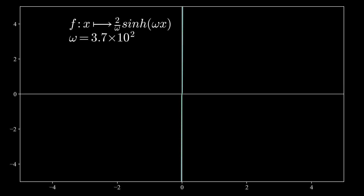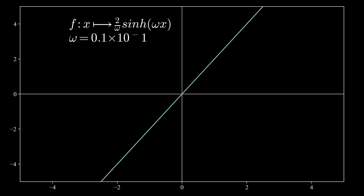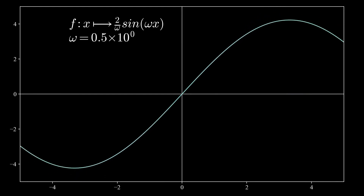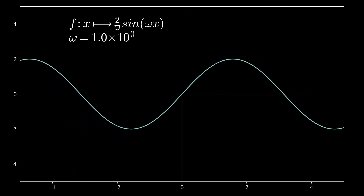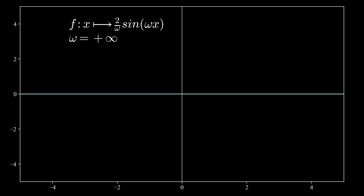For those who want to visualize this transition again, we're going to play it backward. We start with the extreme hyperbolic sine solution with a very high value of omega, then decrease omega to 1, and continue decreasing until it is close to zero — arriving at the linear function. Then we enter the sine solutions starting with an extremely low omega, decrease omega to 1, and keep increasing it to infinity, where the functions slowly merge back into the zero function.